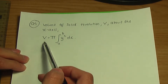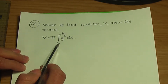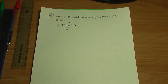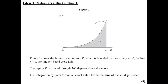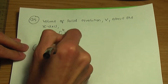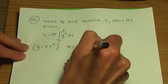To work out the volume of solid revolution about the x-axis, the formula is v equals pi times the integral of y squared dx between your limits a and b. Going back to the question, the limits are x equals 1 and x equals 3 — these will be the limits of the integral. The equation of the curve is y equals xe to the x.